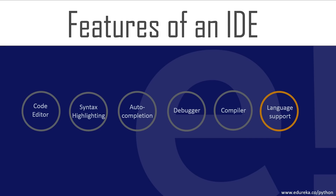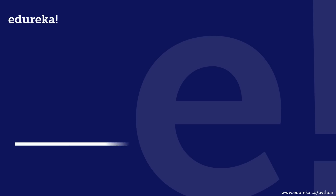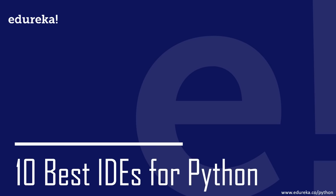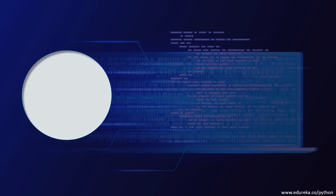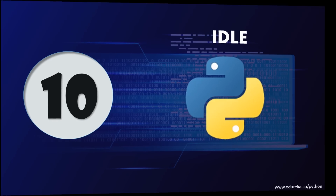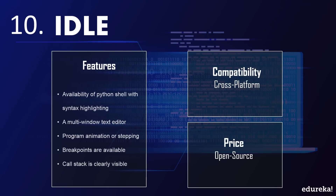Now let's move on to the top 10 best IDEs for Python. At position 10 is IDLE. It's a cross-platform open source IDE which comes as a default implementation along with Python and is written completely in Python as well. Its name is presumed to be in honor of Eric Idle, one of the founding members of Monty Python. This IDE is considered extremely suitable for the education industry due to its simplicity.